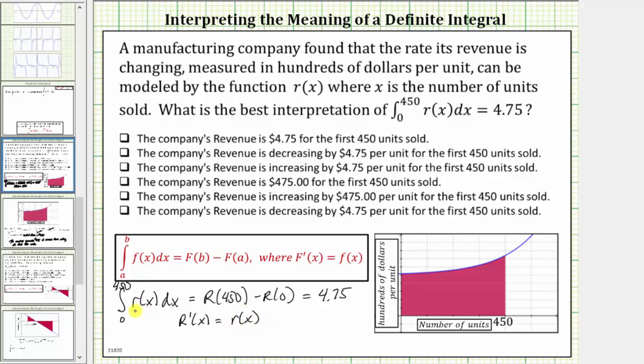But remember, r(x) is actually the derivative of the revenue function because it gives the rate at which the revenue is changing, and therefore big R is the revenue function. So if we evaluate the revenue function at 450 and then subtract the value of the revenue function at 0,